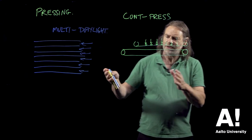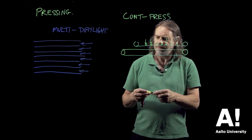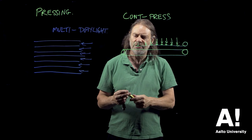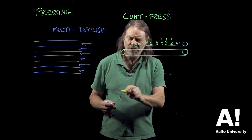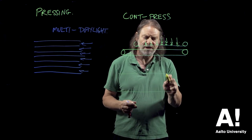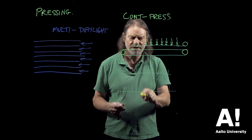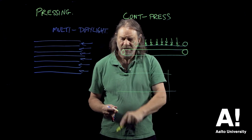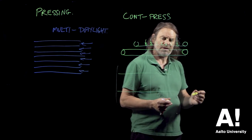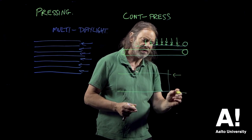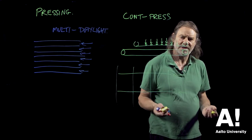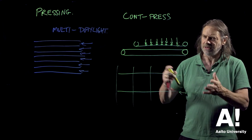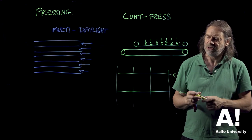And then once the sheet comes out - this is from a continuous press now - so we've got this continuous sheet coming out. We need to saw it into whatever lengths, we need to saw it into widths, and we need to sand it. All these things need to be done so that we get a nice finish to the board.